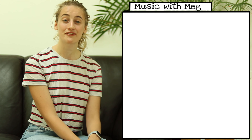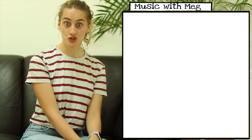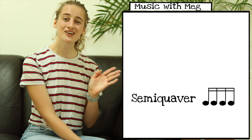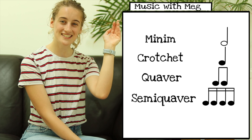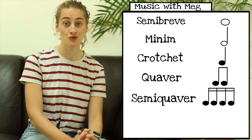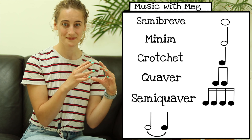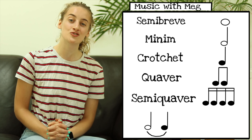Let's recap what we learned today. We learned all of the different note values — starting from the shortest note we have semi-quavers, quavers, crotchets, minims and semi-breves. We learned that you can tie two notes together to combine their value, and we learned that you can add a dot to a note to increase its value by half.